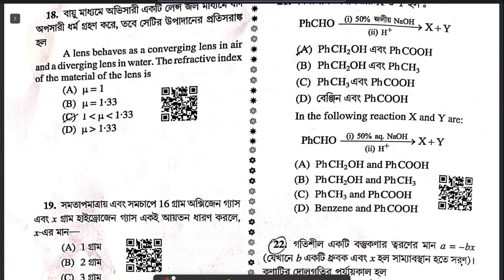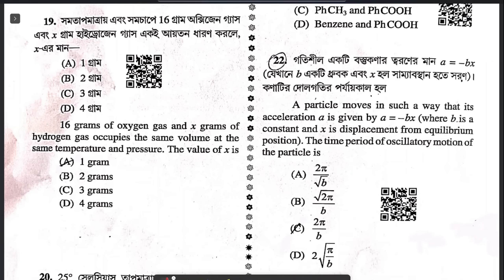Question 18: a lens behaves as a converging lens in air and a diverging lens in water. The refractive index of the lens material should be between 1 and 1.33. So this is the answer.